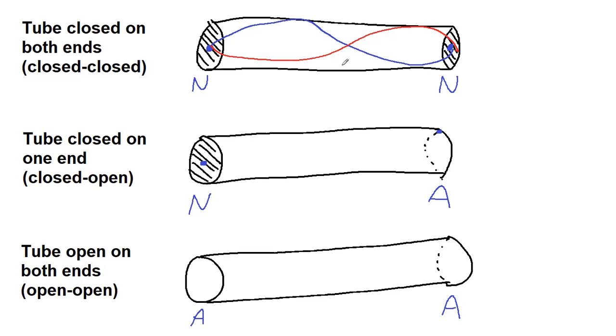And if in this case we look, we see that we have a node here in the middle and an antinode in between.